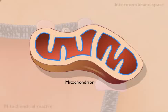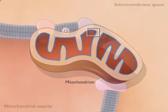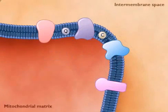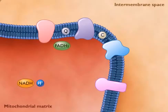In the mitochondrion, the energy stored in NADH is used to generate a proton gradient across the mitochondrial membrane, and the energy of the proton gradient is used to make ATP.